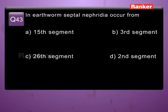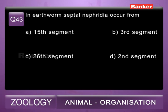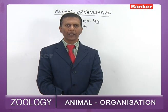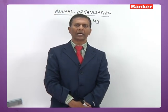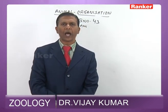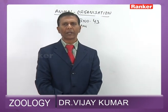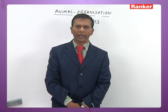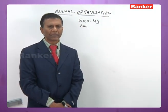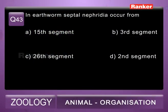Question 43: in earthworm, septal nephridia occur from A) 15th segment, B) third segment, C) 26th segment, D) second segment. In earthworm, three kinds of nephridia are present: integumentary nephridia (also called micronephridia), present from the third segment onwards with about 200–250 per segment; pharyngeal nephridia in the 4th, 5th, and 6th segments; and septal nephridia present from the 15th segment onwards, with about 80–100 per segment, open and enteronephric. So the 43rd question correct answer is A.